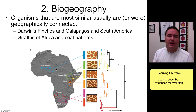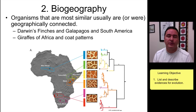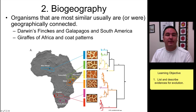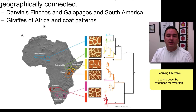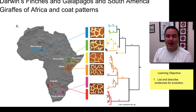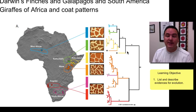Number two: biogeography. There are patterns on this planet where organisms that are geographically connected or live more closely to one another tend to be more similar. We can see this with Darwin's finches on the Galapagos — they're closely related to each other and most closely related to finches from South America. Similarly, giraffes in Africa with the most similar coat patterns are also the most closely related genetically and live geographically next to each other.